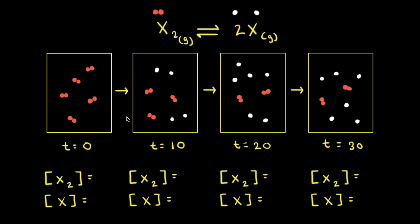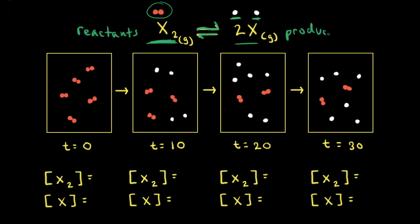Now let's apply this concept of dynamic equilibrium to a hypothetical chemical reaction. In our hypothetical reaction, X2, which is a reddish brown gas, decomposes into its individual atoms to form 2X, and the individual atoms are colorless. In the forward reaction, we're going from X2 to 2X. In the reverse reaction, the two atoms of X are combining together to form X2. By convention, what's on the left side are the reactants and what's on the right side are the products.